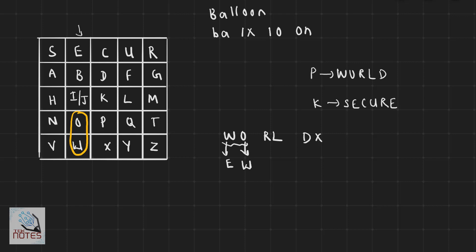We look at the row and column positions of each letter in the matrix. If the two letters are in the same column, we substitute each with the letter below it. If they form a rectangle, we take the letters at the opposite corners of that rectangle. For example, if W and O form a rectangle, the cipher letters are the corner values — such as U and M.